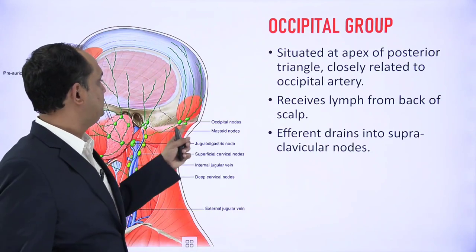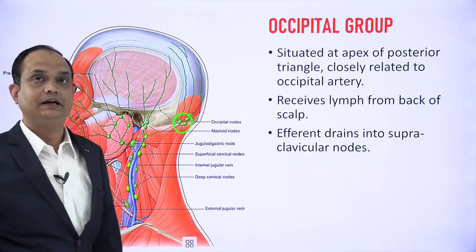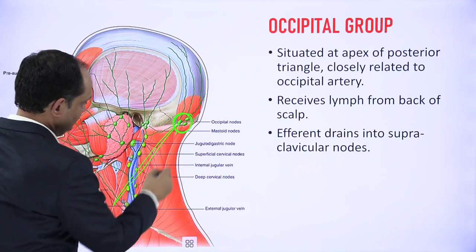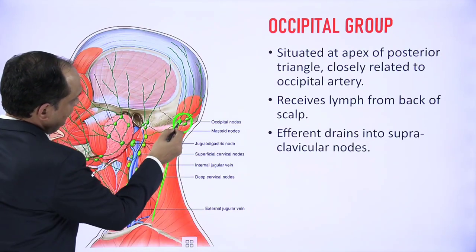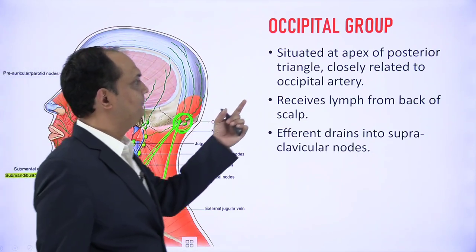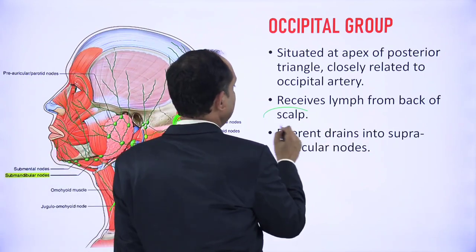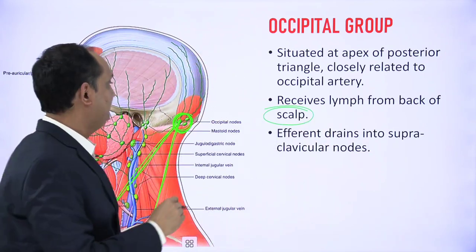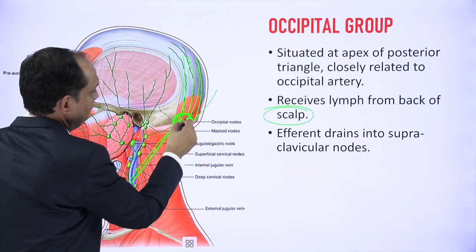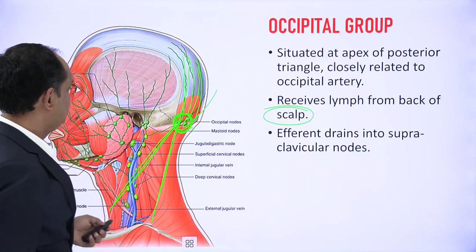The posteriormost group is the occipital group, present near the apex of the posterior triangle in relation to the occipital artery. It receives lymph from the posterior part of the scalp. Lymph from this group ultimately drains into the supraclavicular group of lymph nodes.